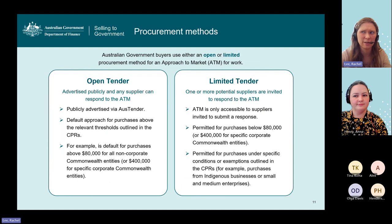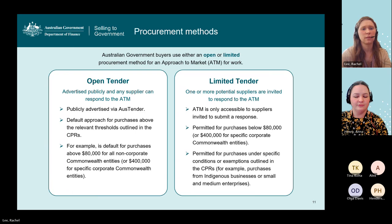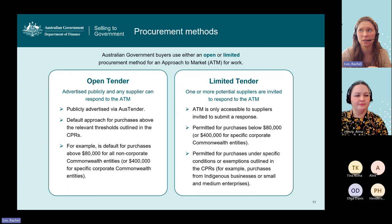Now we'll run through the various methods an Australian Government buyer may use to approach the market. A buyer can use either an open or a limited procurement method. When we use the term ATM or 'approach to market', that's the general term covering a variety of different types you may have heard of, such as request for tender or request for quote. An open tender must be advertised publicly on AusTender and any supplier can respond — it's the default approach for purchases above those procurement thresholds in the CPRs.